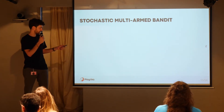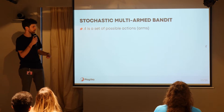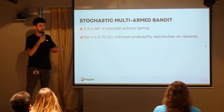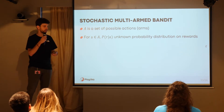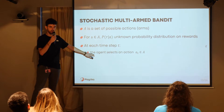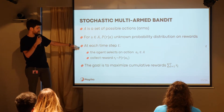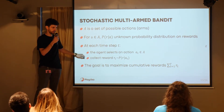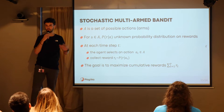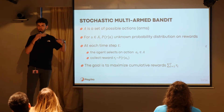In the stochastic multi-arm bandit framework, you have a set of possible actions — called arms — each with an unknown probability of reward. When you select an action, you don't know what reward you'll get; that's what you try to learn. At each timestep, the agent selects an action and collects the reward from the environment. By continuously and iteratively doing so, you learn a policy to maximize reward in the long term, not just the immediate reward.